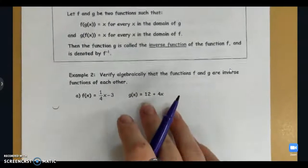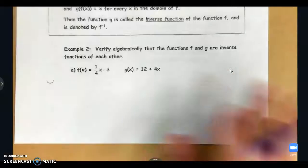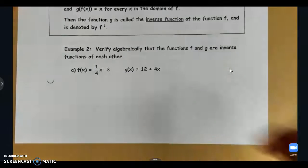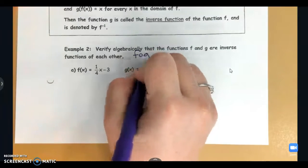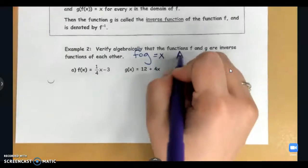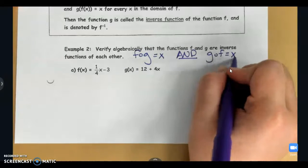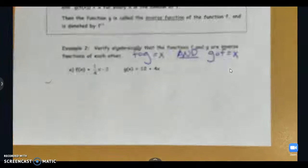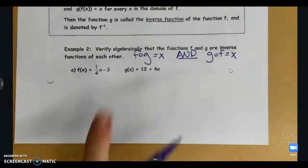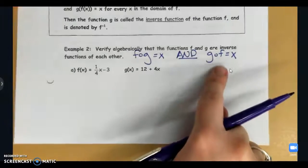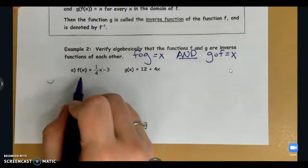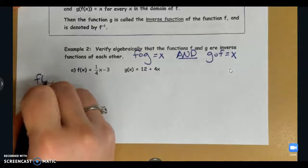Now to verify that two functions are inverses of each other, we can do this algebraically. So f of g has to be x and g of f has to be x in order for functions to be inverses of each other. And we verify this by taking the composition f of g and the composition g of f. Let's start here. First, let's take f of g.